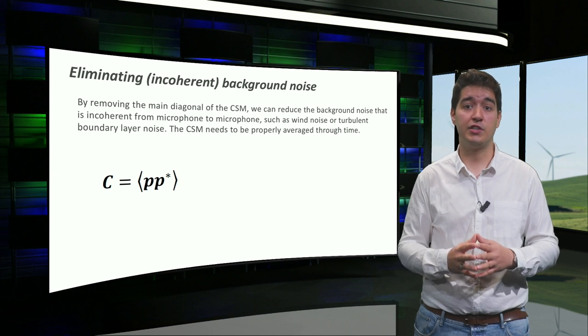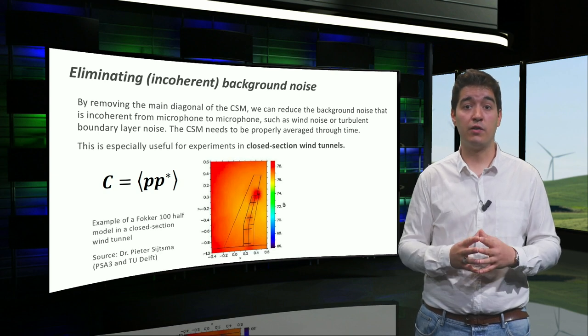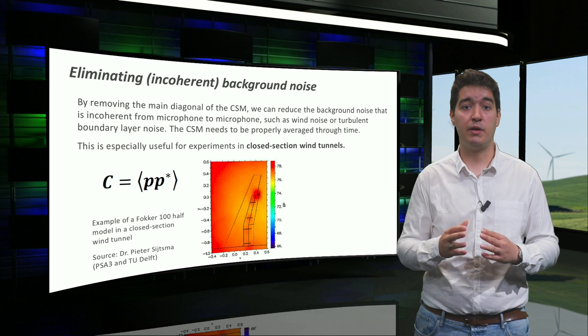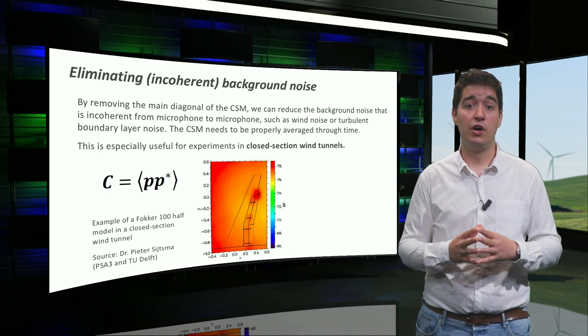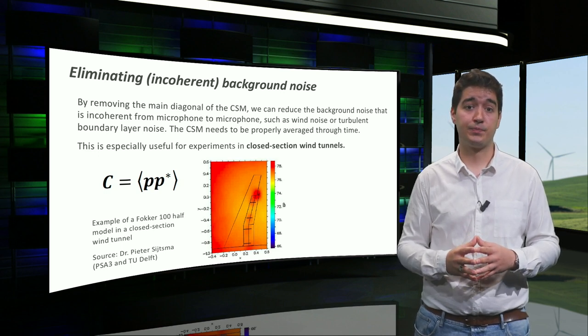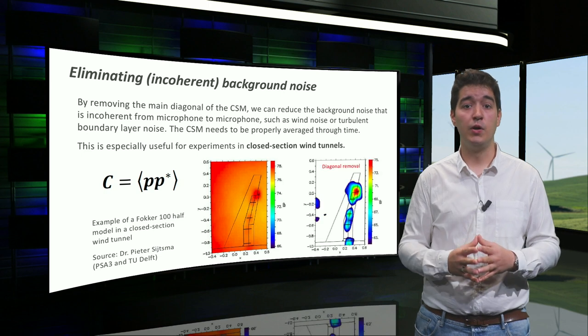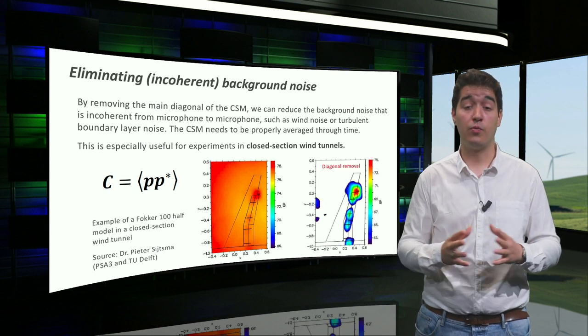This is especially useful for closed section wind tunnels, where the microphones normally measure hydrodynamic pressure fluctuations of the wind tunnel boundary layer. In this example, we can see how the results improve when we remove the diagonal.